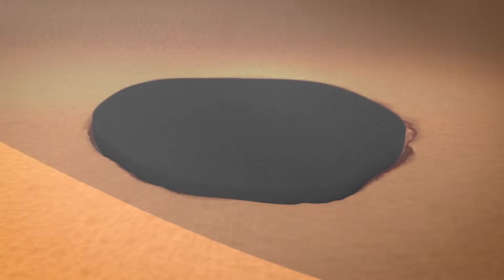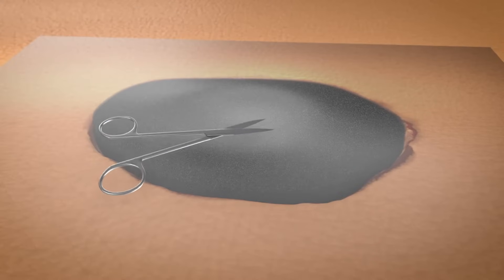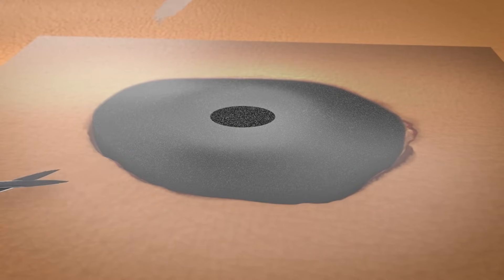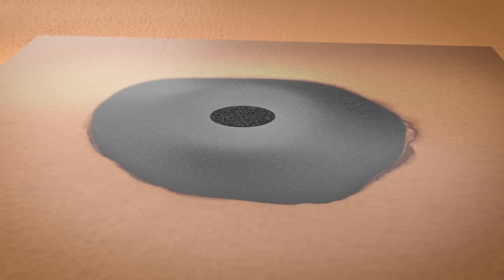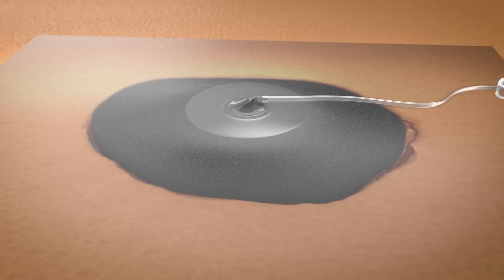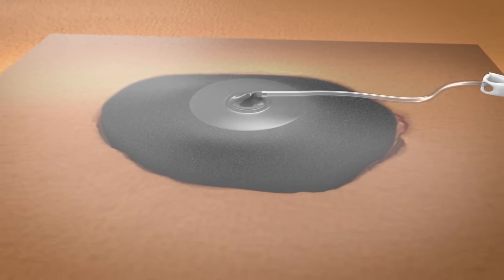A semi-permeable drape is then used to seal the wound, provide a moist wound environment, and protect the wound from external contamination. The proprietary 3M sensor track pad and tubing are then applied to the drape and provide the connection to the therapy unit.